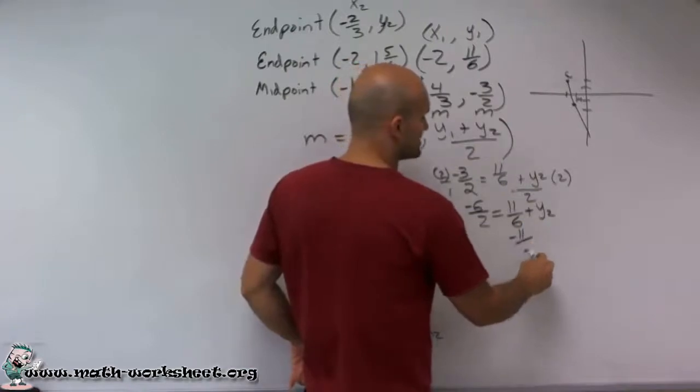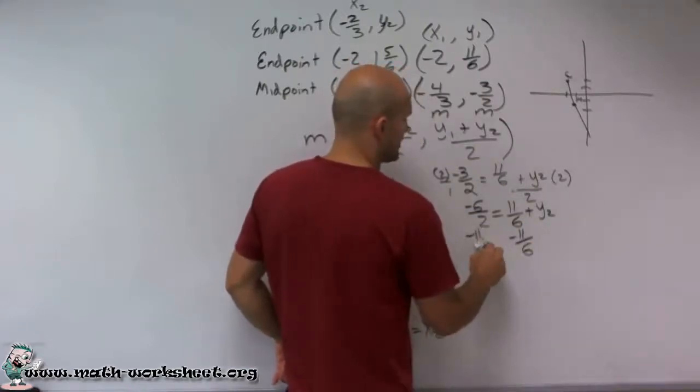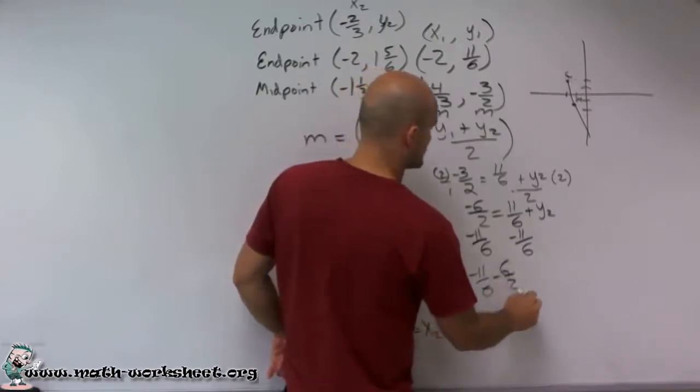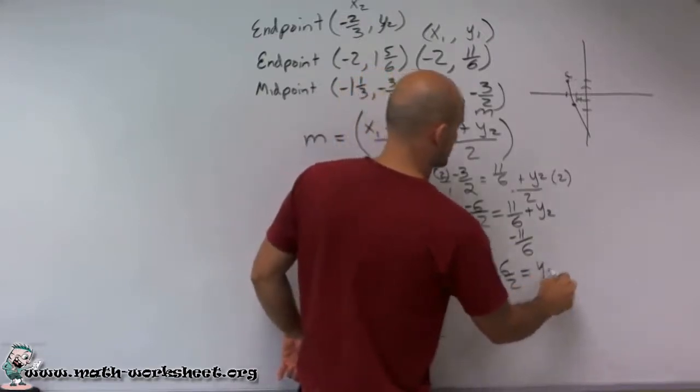To get rid of the 11/6, I'm going to subtract 11/6. So therefore, I have a negative 11/6 minus 6/2 equals y2.